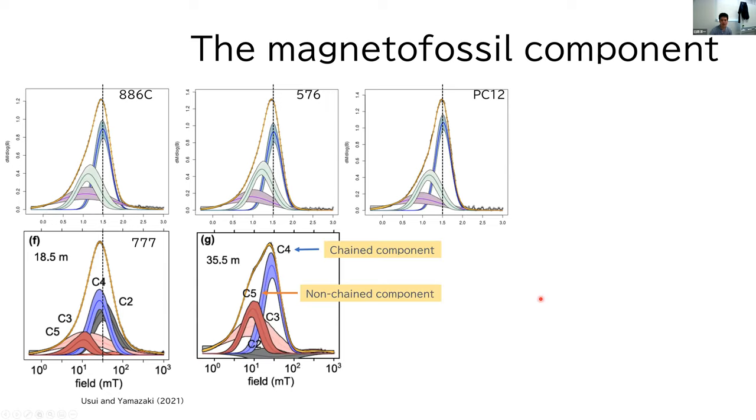when I do component unmixing, these could be fitted by a combination of higher coercivity biogenic component and lower coercivity biogenic component, which is very similar to the chained and non-chained component observed in site 777.